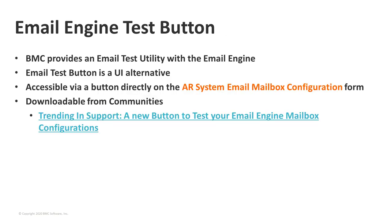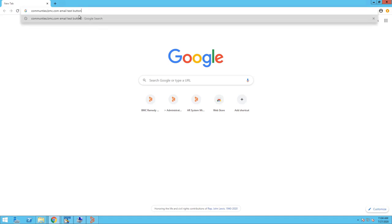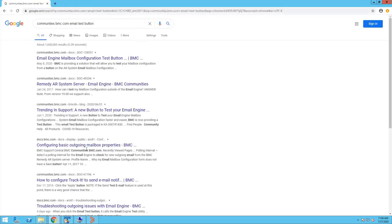Now let's look at the exciting new email engine test button. BMC already provides an email test utility that comes with the email engine, which Mike will demo a little bit later. But the email test button is a UI alternative to that. It's accessible through a button directly on the AR System Email Mailbox Configuration form. The utility is targeted for a future release of the AR system, but it's available now as a download from the BMC Communities. I'm going to search for 'communities.bmc.com email test button' to find it — the best place to start is the 'Trending in Support' article on a new button to test your email engine mailbox configurations.